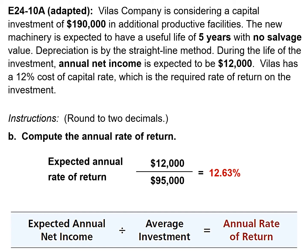If we divide $95,000 into $12,000, we get 12.63%, and that is our annual rate of return.